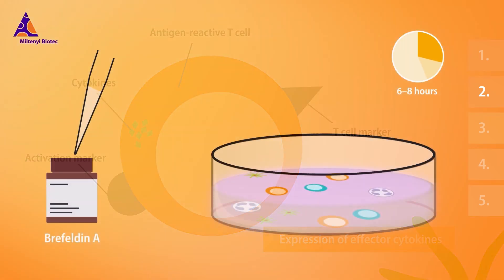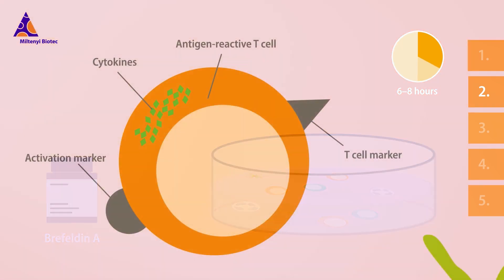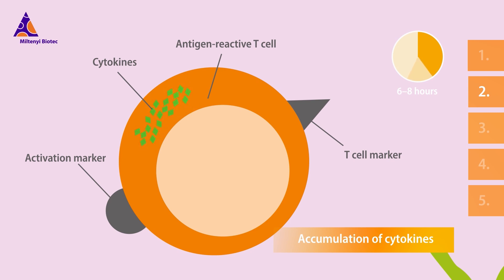Add Brefeldin-A for the last two hours of stimulation. Cytokines will accumulate and can later be detected by flow cytometry.